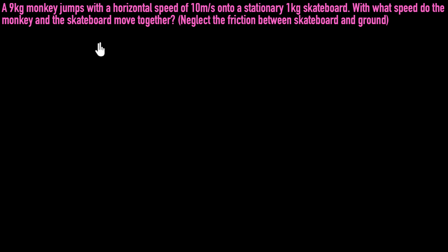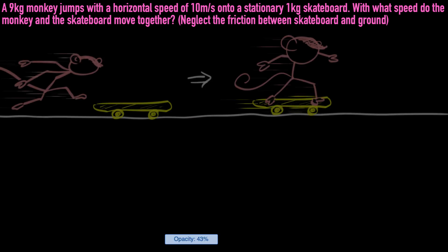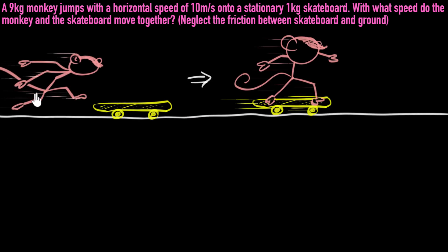Let's look at what is given to us first. We'll draw a diagram, then gather the data, see what is asked, and then come up with a strategy to solve that. So let's look at what's given to us. We're given that a monkey is jumping onto a skateboard. So here's our picture — this is our monkey, and it's going to jump on that skateboard and then they'll start moving together.